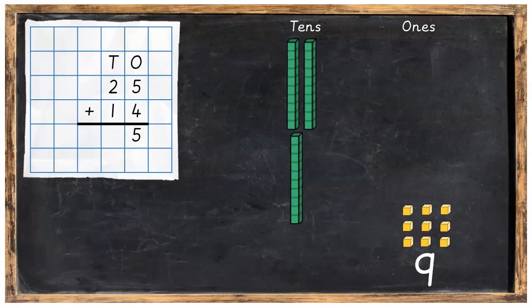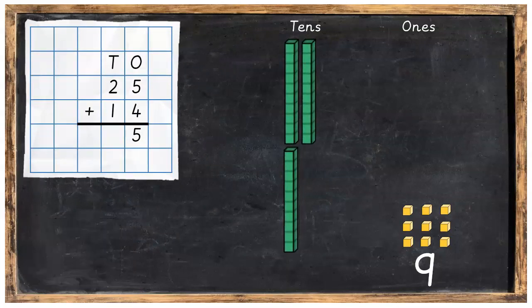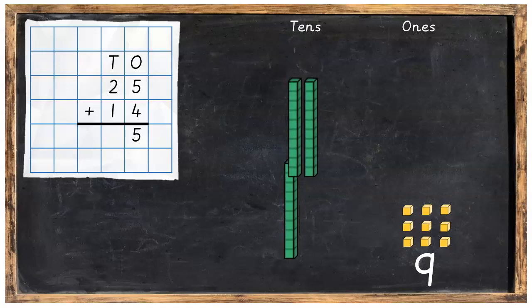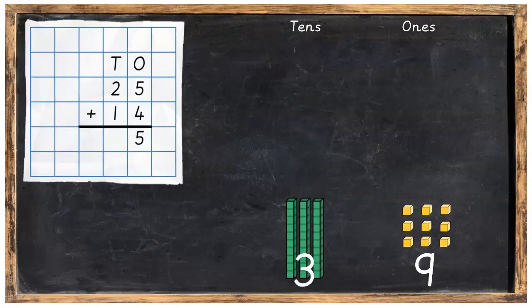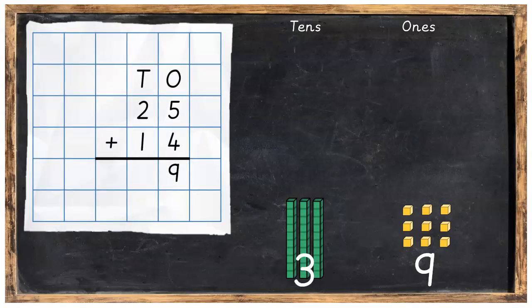Great work. Now we're going to focus on the tens. So we're going to add the two tens and the one tens together to make three tens. Then we're going to go back to our sum and add the two tens plus the one ten to make three tens.